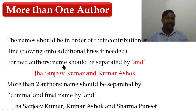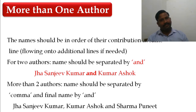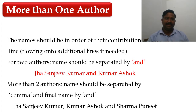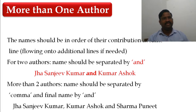For two authors, names are separated with the word 'and.' If there are more than two authors, the first and second are separated by a comma, and the last two authors are separated by 'and.' Other authors in between are also separated by commas.